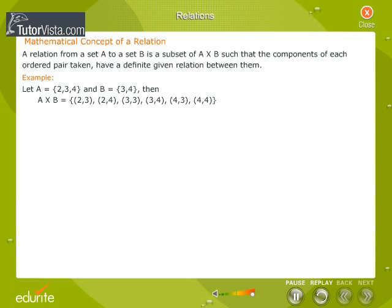A × B is equal to {(2,3), (2,4), (3,3), (3,4), (4,3) and (4,4)}.